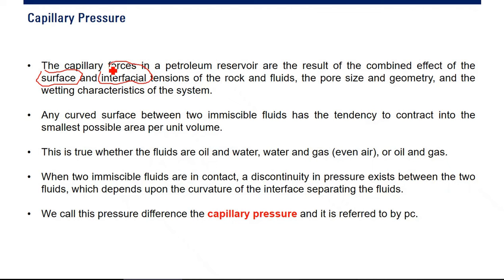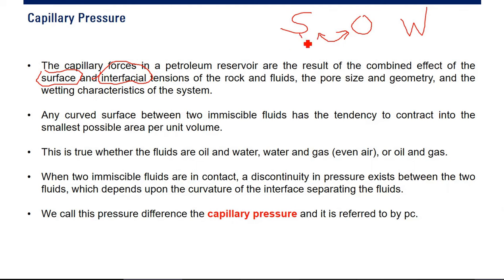What is the difference between surface tension and interfacial tension? For surface tension, for example, we have a solid surface S, and then we have oil, and then we have water. Between oil and solid, it is surface tension. Between the solid and water, this is also surface tension. But between oil and water, this is interfacial tension. Between oil and water, oil and gas, water and gas — we have interfacial tension.